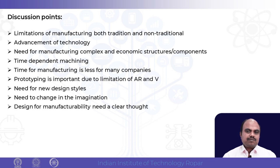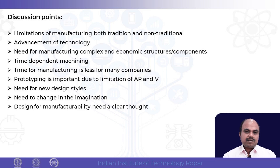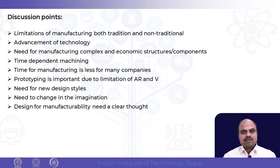Traditional machining processes, including CNC machining, are much more accurate but take a lot of time. It takes a lot more time to make the product because we need to understand the product, make the CNC code, and put it in the CNC machine. Depending upon the complexity of the product, we may need 5-axis or 7-axis CNC machines, and this machining process is going to take a lot of time. Nowadays, companies want to manufacture products faster, so the question is how to enable manufacturing of complex geometries faster.